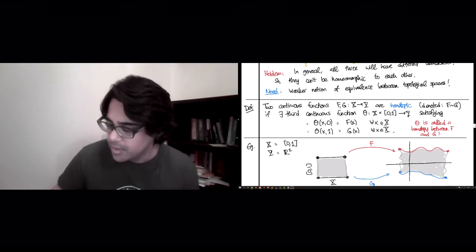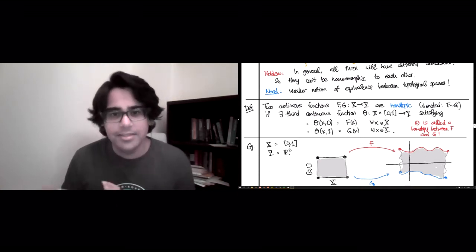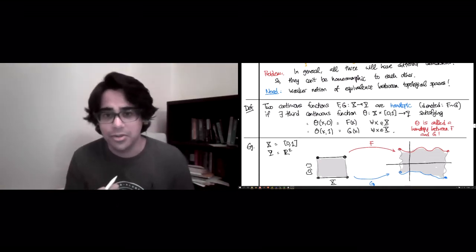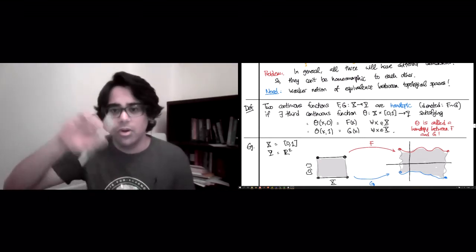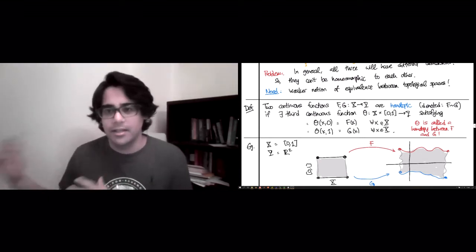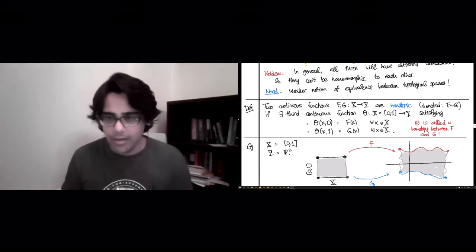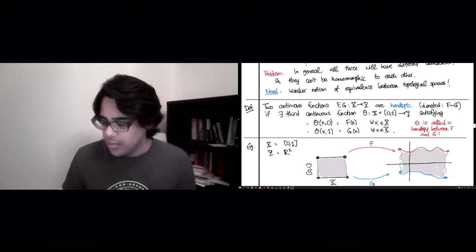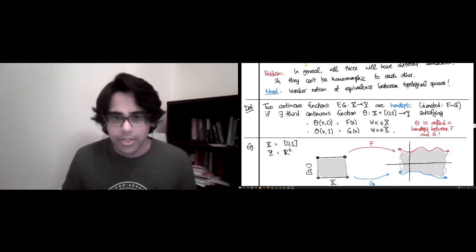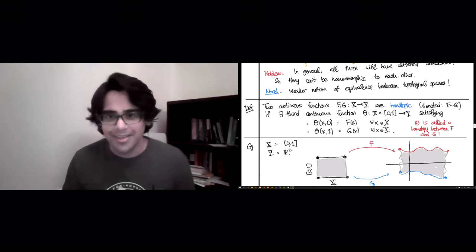You can make this fancier. Here X and [0,1] are the same, but in general X could be, for instance, a circle, in which case this X cross [0,1] would be a cylinder, and then you could embed a cylinder in R^3 or something like that. So this is one picture to keep in mind.